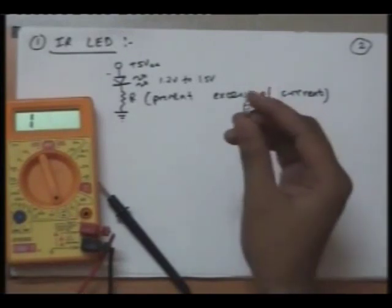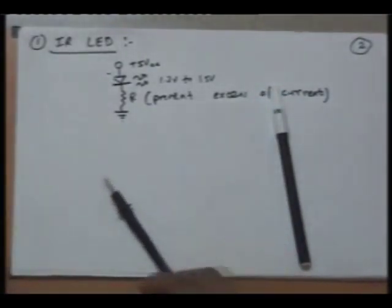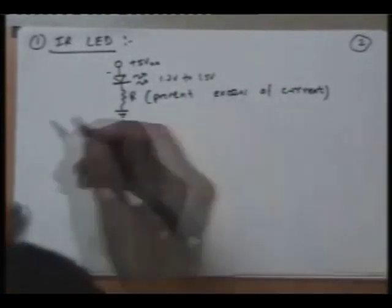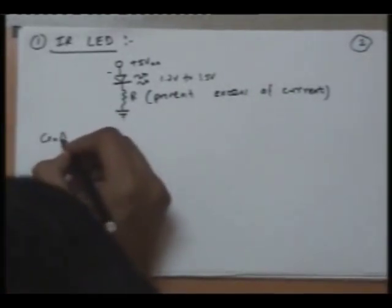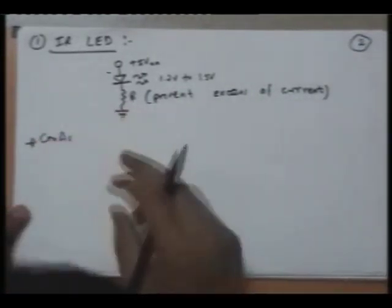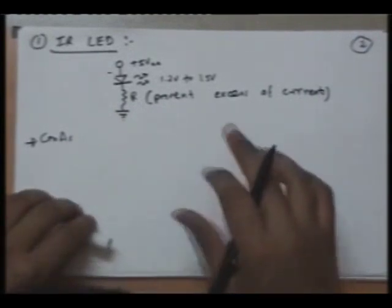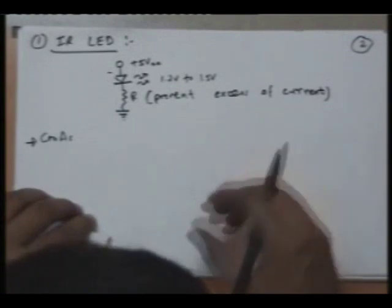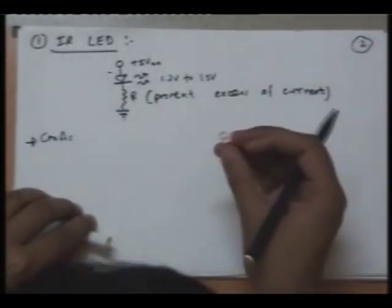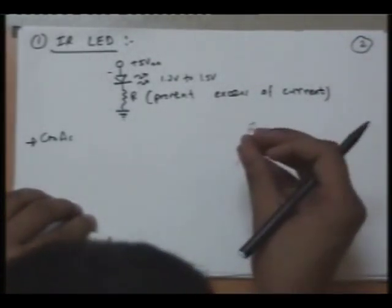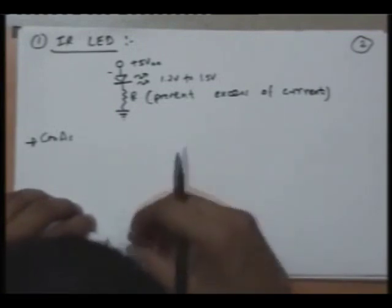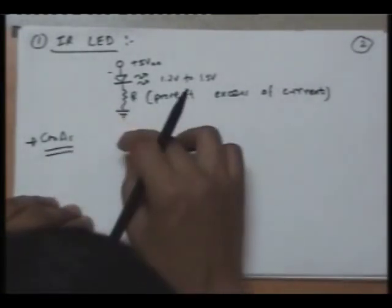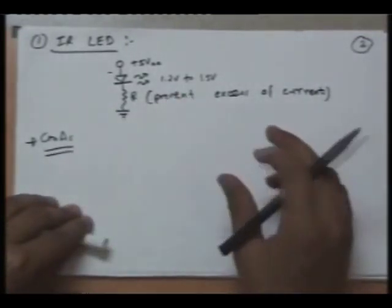Generally, these LEDs are made up of gallium arsenide. As you all know, the wavelength or frequency of rays emitted from any semiconductor material depends upon its energy band gap. The energy band gap of gallium arsenide is such that the rays emitted have